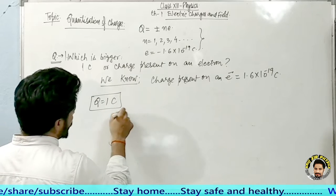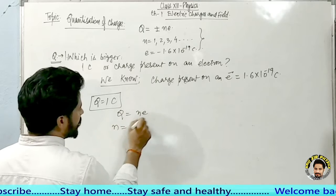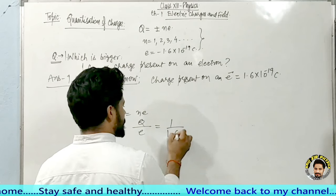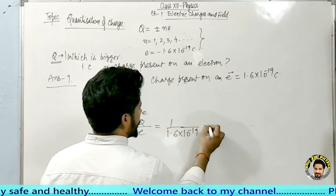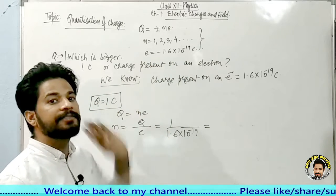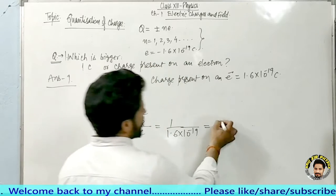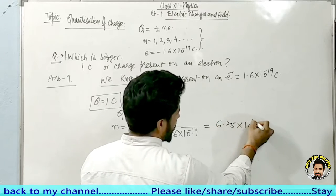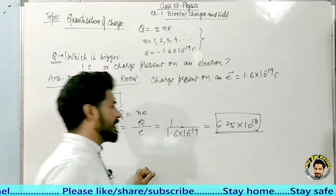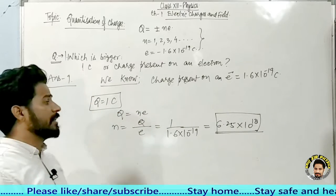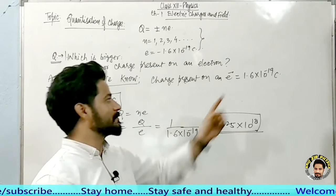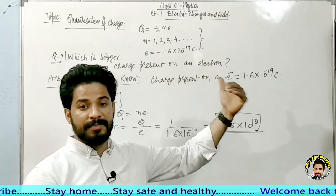From here n will be calculated as Q upon e. So Q is 1 upon e is 1.6 into 10 to the power of minus 19. Here I have taken magnitude only, no negative sign to avoid confusion. This equals 0.625 into 10 to the power of 18. Thus you can see that 1 coulomb charge is equivalent to 10 to the power of 18 electrons ke barabar hai. So many electrons' charge equals 1 coulomb.